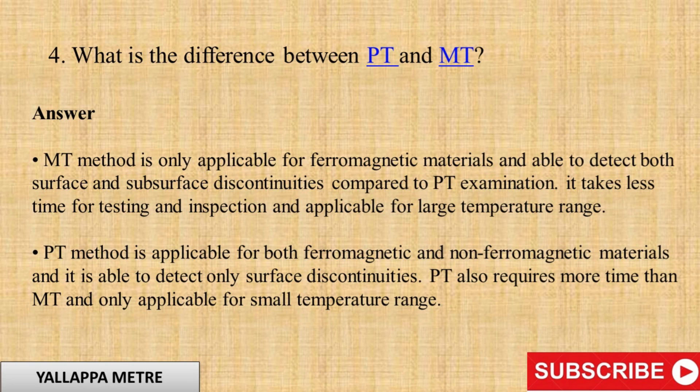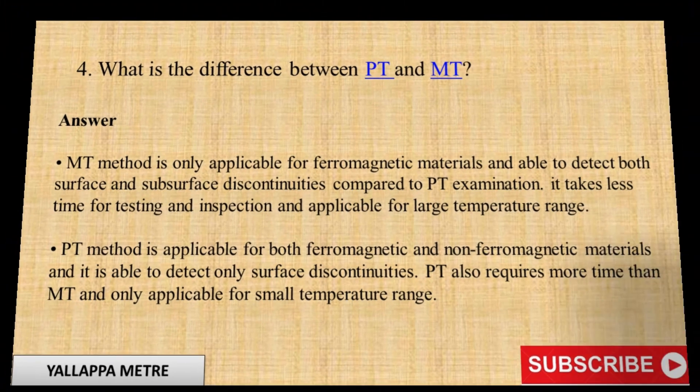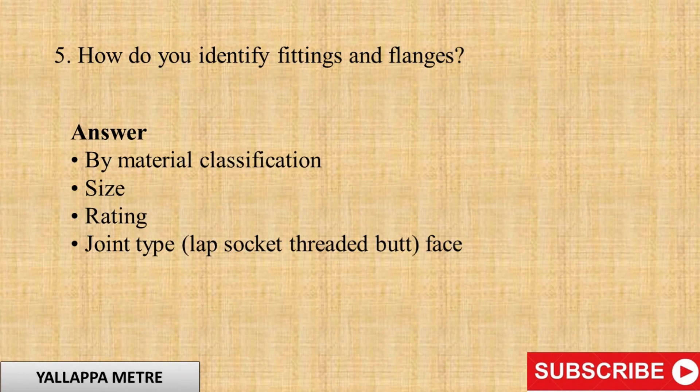Question 4: What is the difference between PT and MT? Answer: MT method is only applicable for ferromagnetic materials and able to detect both surface and subsurface discontinuities, compared to PT examination. It takes less time for testing and inspection and is applicable for a large temperature range. PT method is applicable for both ferromagnetic and non-ferromagnetic materials but is able to detect only surface discontinuities. PT also requires more time than MT and is only applicable for a small temperature range.